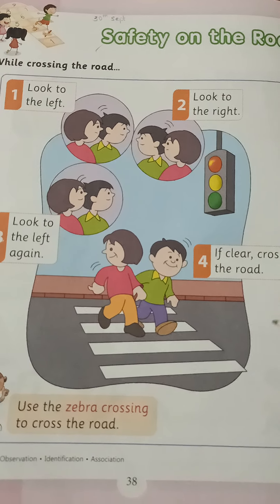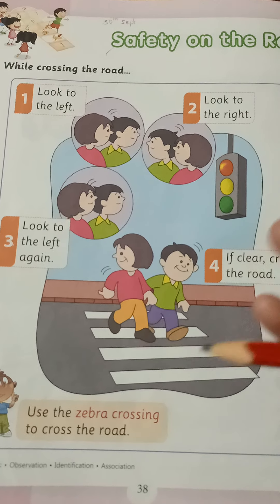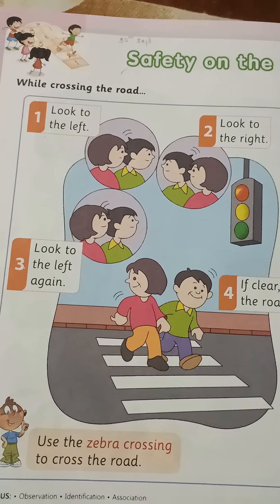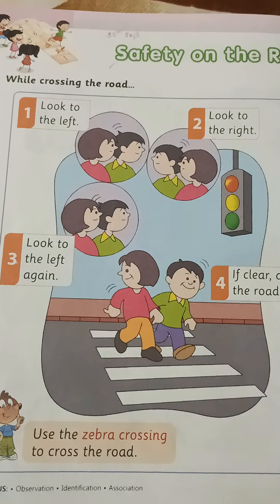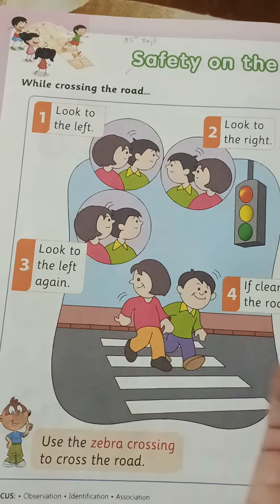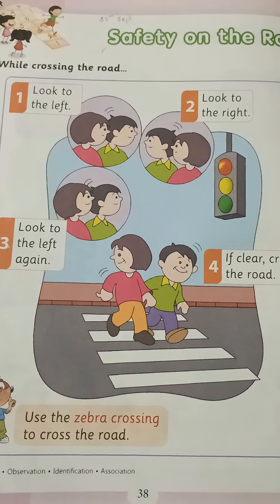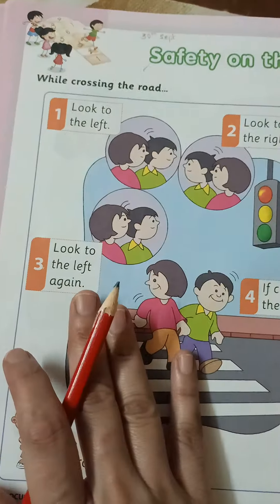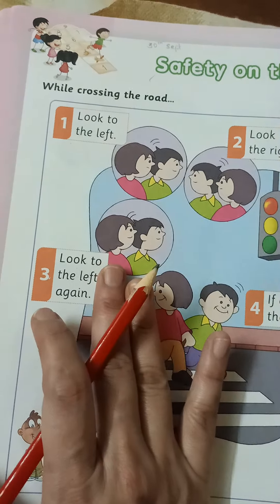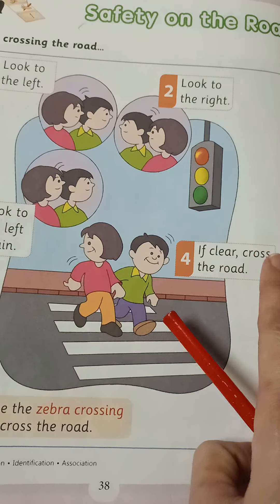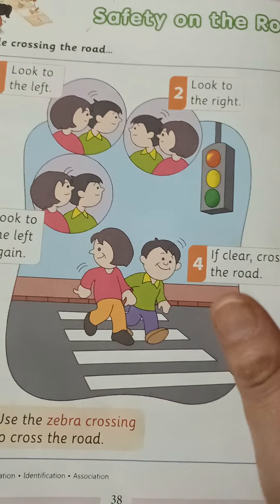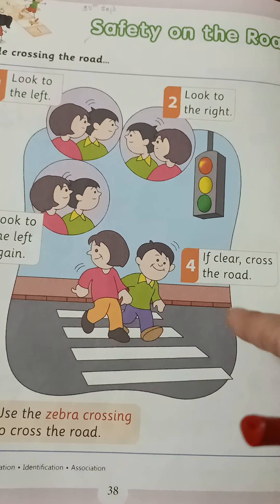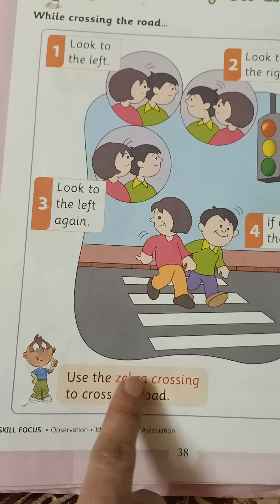What steps do we follow while crossing the road? When you have to cross from one side to the other, you must cross safely. The first step is to look to the left, then look to the right, then look to the left again. Before crossing the road, look left, look right, and look left again. Now, if the road is clear — if you don't see any vehicles — then you will cross the road.